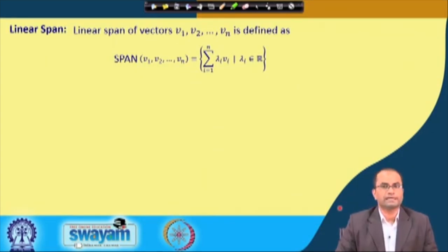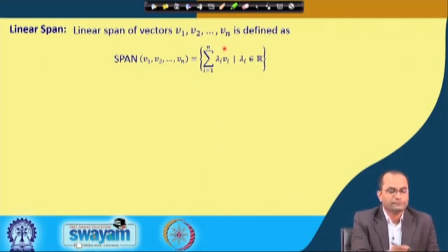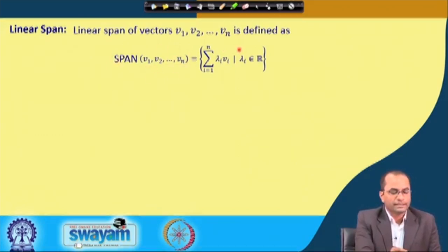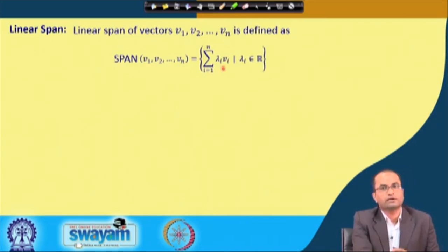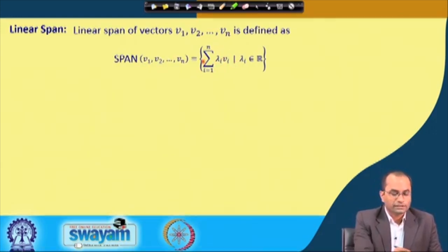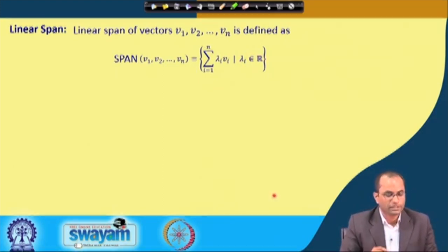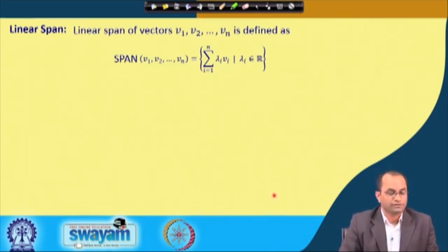What is the linear span? The linear span of given vectors v₁, v₂, v₃, ..., vₙ is defined — usually denoted as span{v₁, v₂, ..., vₙ} — as the set of all linear combinations of these vectors: λ₁v₁ + λ₂v₂ + ... + λₙvₙ, where each λ belongs to the set of real numbers.